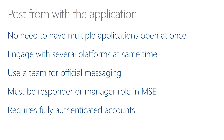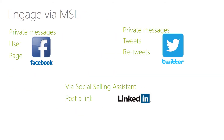Posting and replying from within the application offers you the chance to not have many items open at once — you can have the single application open and do all that interaction from the same place, engaging with all those platforms at the same time. This allows use as a team for official messaging. If you've got an authenticated account with a large audience, more than one person can be engaged socially answering in an official capacity, and they can all be managed within social engagement. To use this, you must be a responder or manager role in social engagement, and this requires a fully authenticated account. You have the ability to do private messages as both a user or page user within Facebook, do tweets, retweets, and private messages from Twitter, and post a link through LinkedIn using the social selling assistant — all with your authenticated accounts.